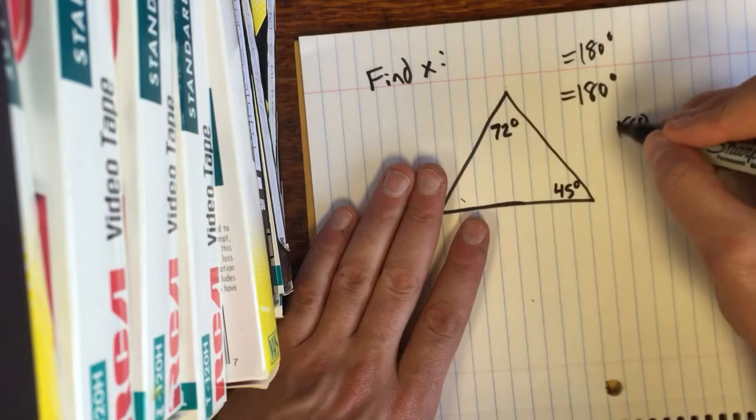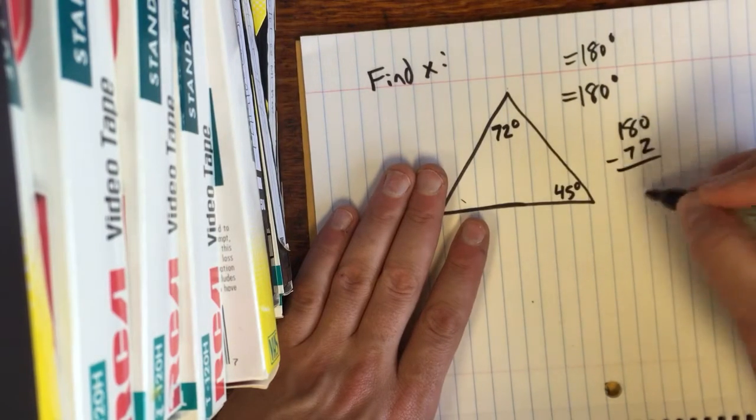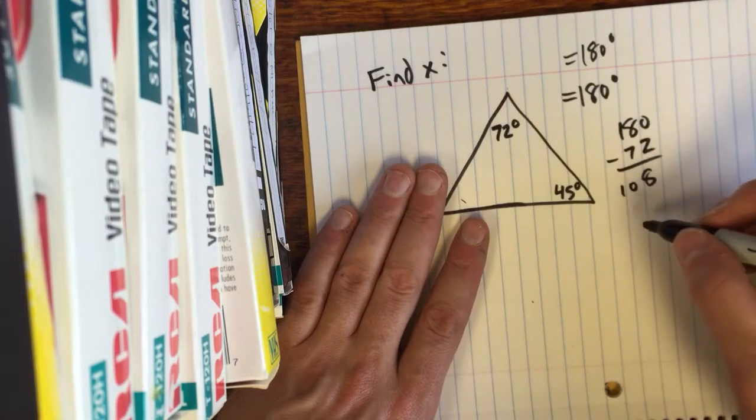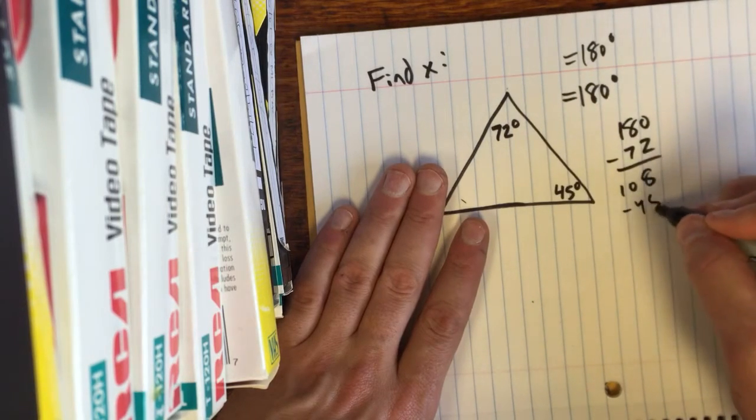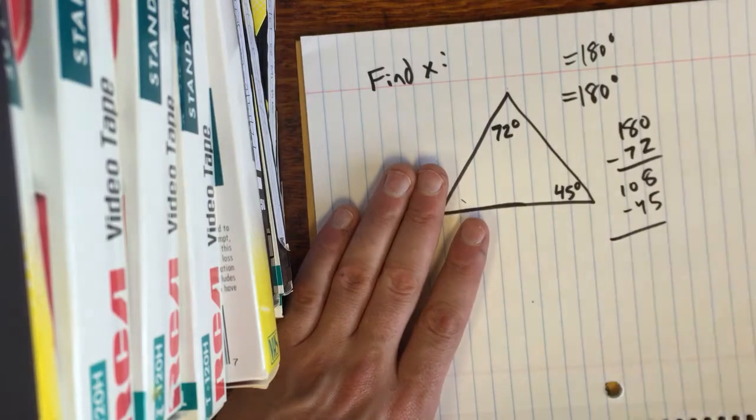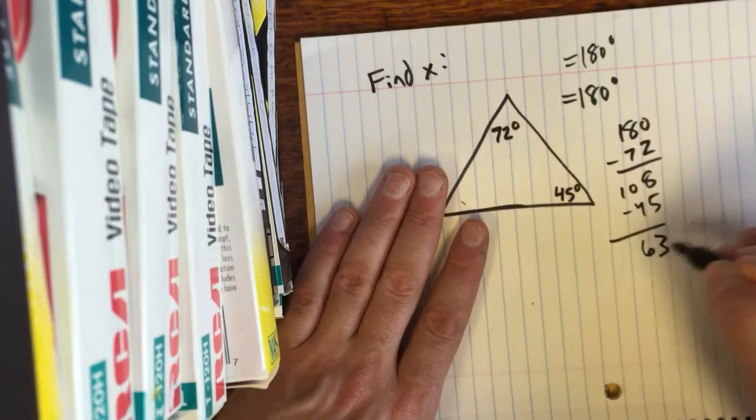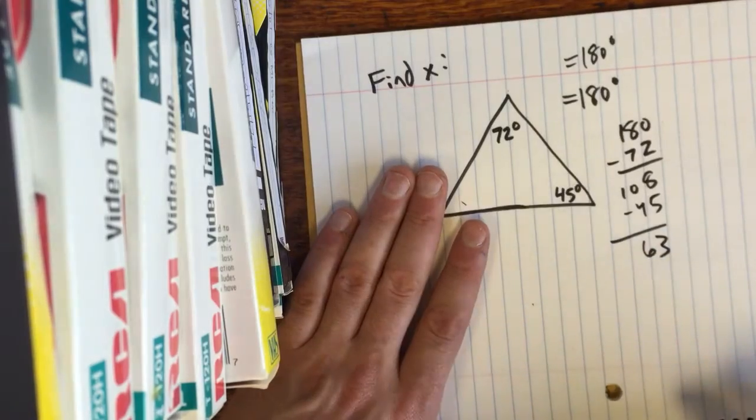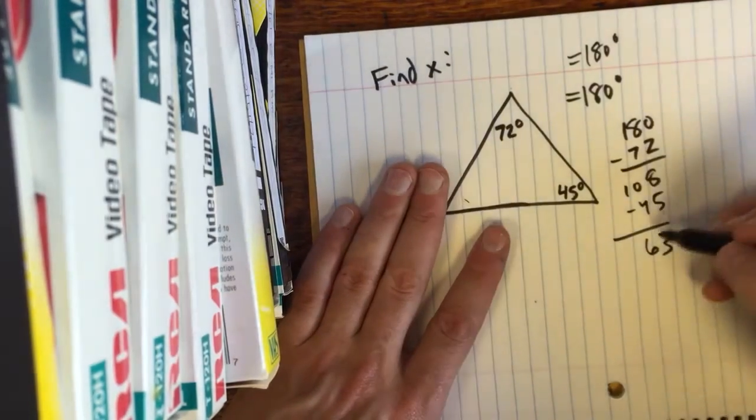So we'd just take 180, subtract 72 from it, which is 108, and then subtract 45 from it, which is easy, 63, that's right. Okay. Sorry, I like to check myself because I don't want to look back at this video and have to delete it.